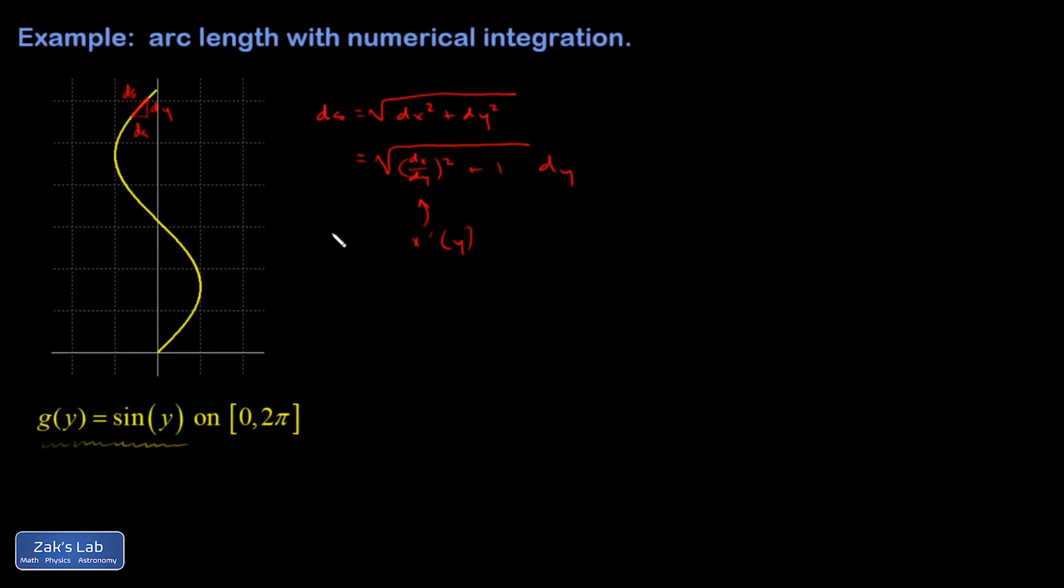All right, so we're pretty much ready to start setting up the integral. And I need to get g prime of y. And that's going to give me, again, I'm differentiating with respect to y, not x. So that's going to give me just a simple cosine of y.